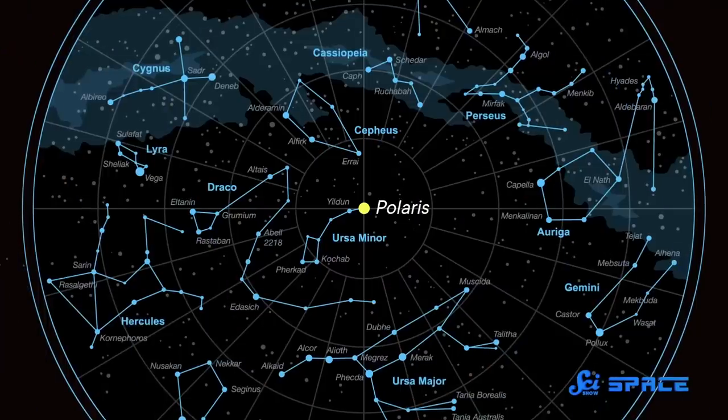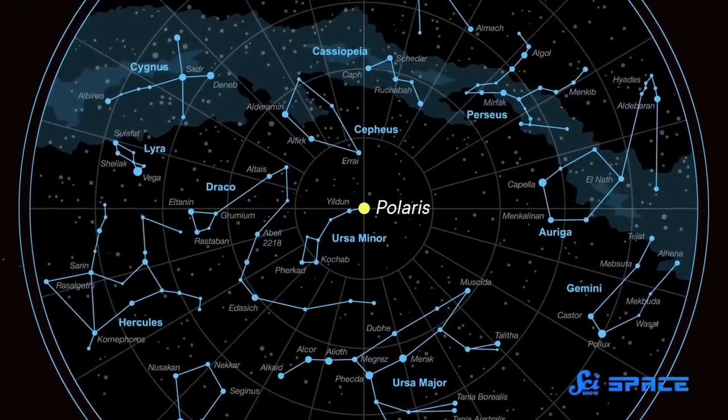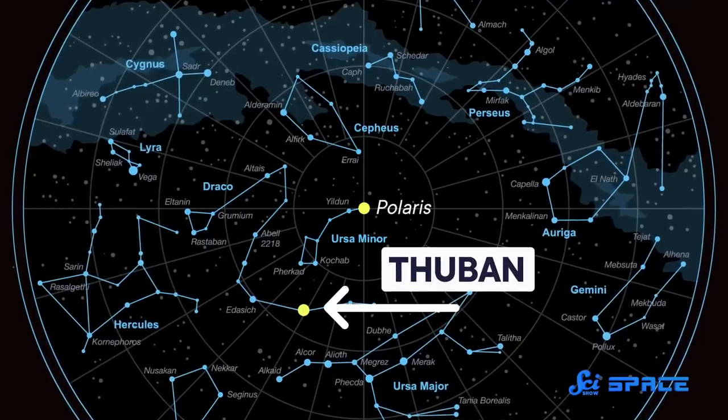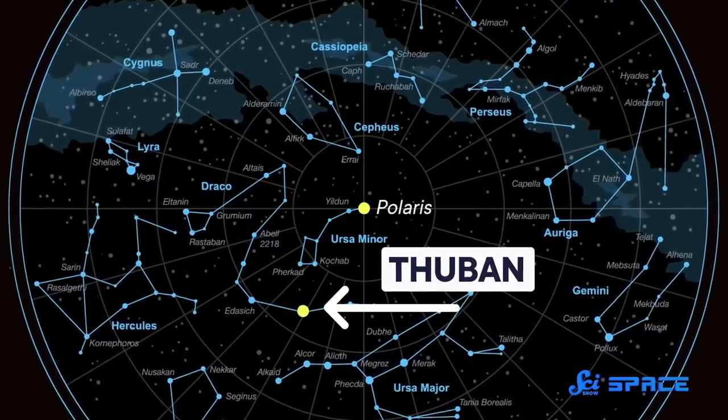But ever since 2012, the distance between Polaris and the North Pole has been widening. In 21,000 years, Earth's axis will have wobbled back around to Thuban, which held the title of the North Star 4,800 years ago.